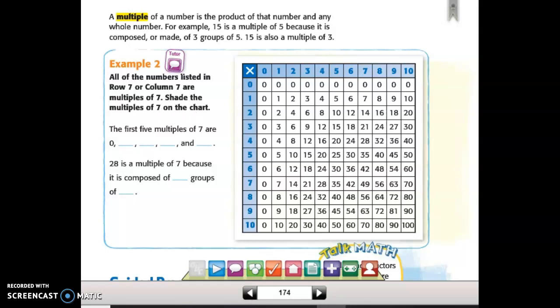So all the numbers listed in row 7 or column 7 are multiples of 7. Shade the multiples of 7 on the chart. We're talking about 7, so this column going down are all multiples of 7, and this row across. So we've got our 7's column and our 7's row. And all the numbers that are highlighted here are the multiples of 7.